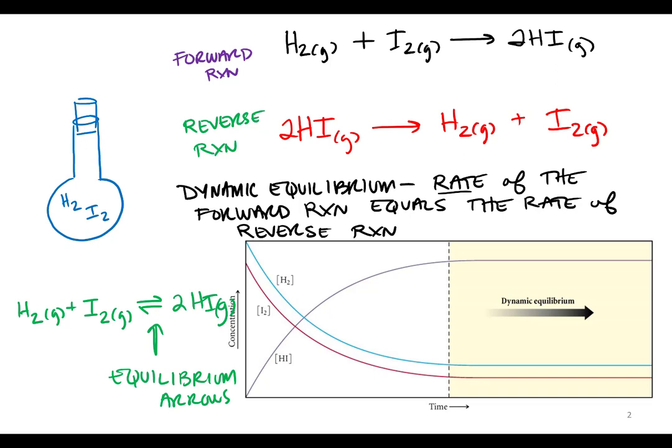Eventually what happens for a reversible reaction is that the rate of the forward reaction will decrease and the rate of the reverse reaction will increase, and a feedback loop comes together where eventually they equal. So the rate of the forward reaction equals the rate of the reverse reaction — that's what we call dynamic equilibrium.